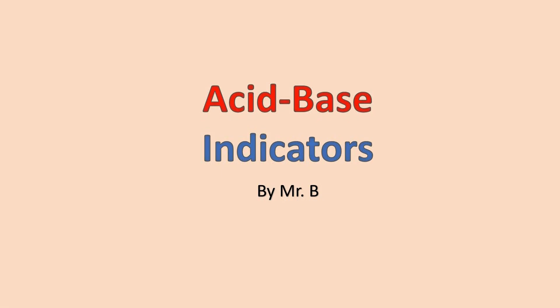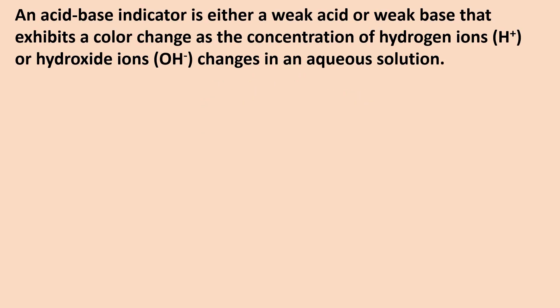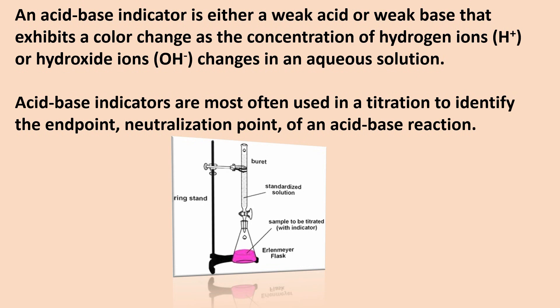Acid Base Indicators. An acid base indicator is either a weak acid or weak base that exhibits a color change as the concentration of hydrogen ions or hydroxide ions changes in an aqueous solution. Acid base indicators are most often used in a titration to identify the endpoint or neutralization point of an acid base reaction.